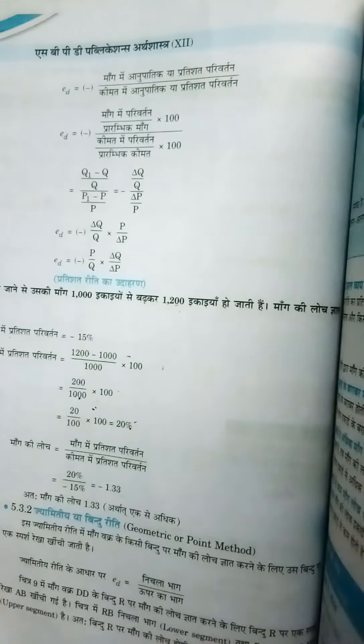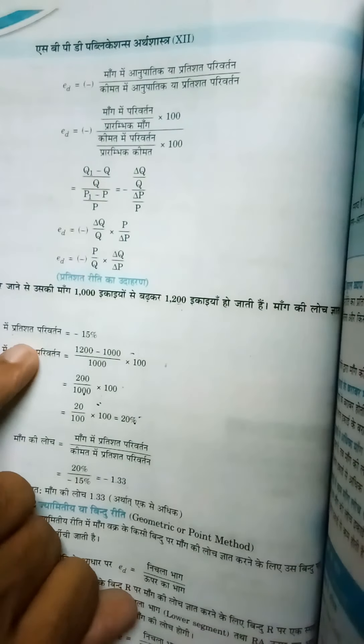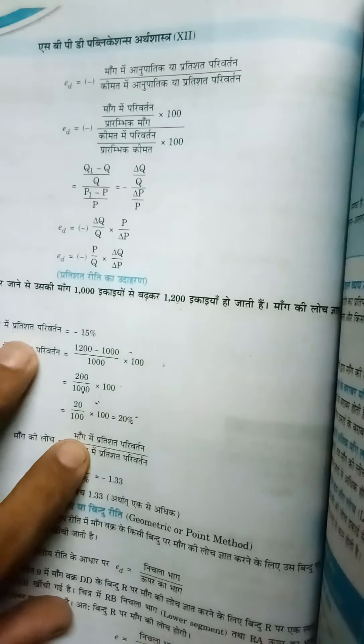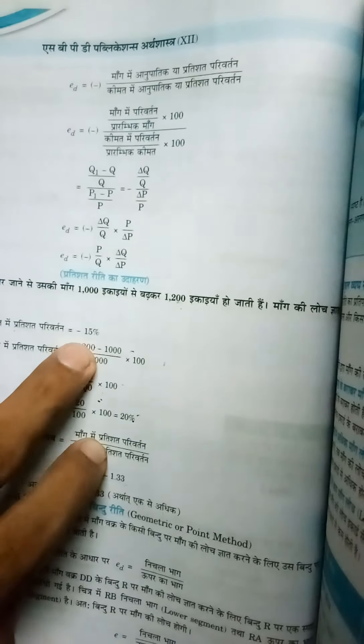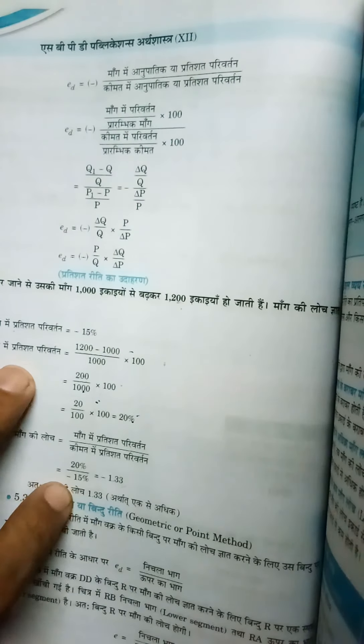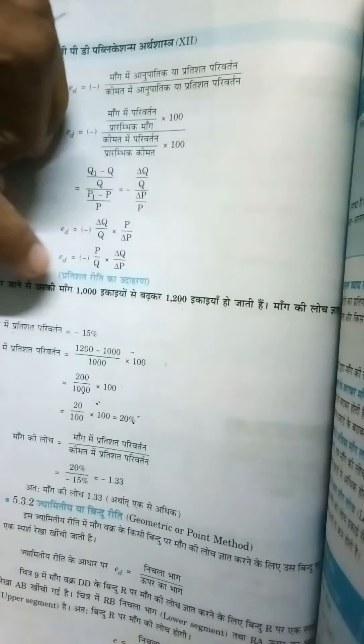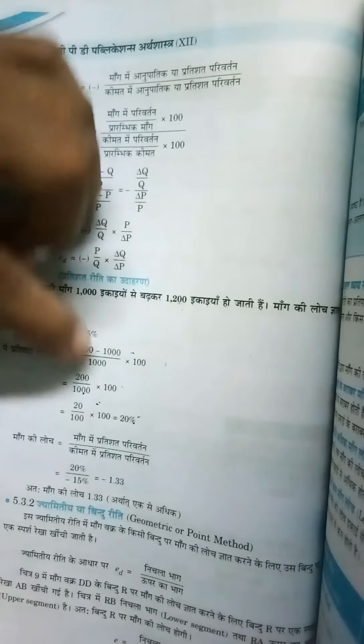To find elasticity of demand: percentage change in price is minus 15%. Percentage change in demand is calculated as 1200 minus 1000 divided by 1000 times 100. That's 200 divided by 1000 times 100.